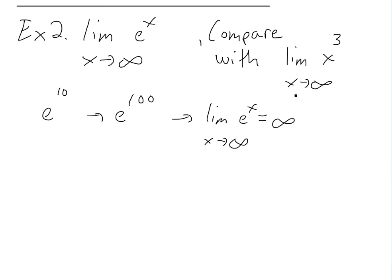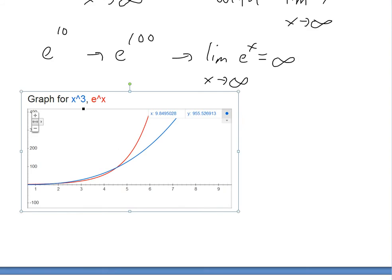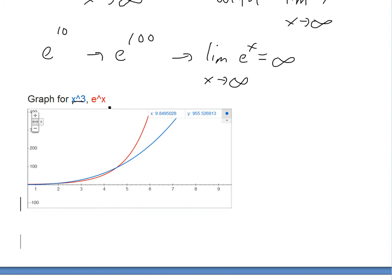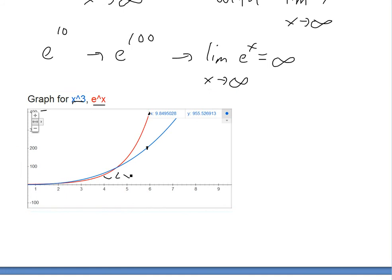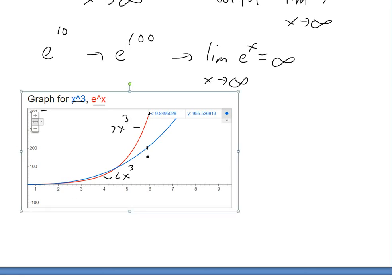When we compare these by graphing them together: the blue curve is x³ and the red curve is e^x. At a value like x = 6, x³ gives around 200 while e^x gives close to 400. Initially e^x is actually less than x³ at the beginning, but as x gets really large, e^x becomes greater than x³. So e^x > x³ as x approaches infinity — the exponential increases faster than the cubic.